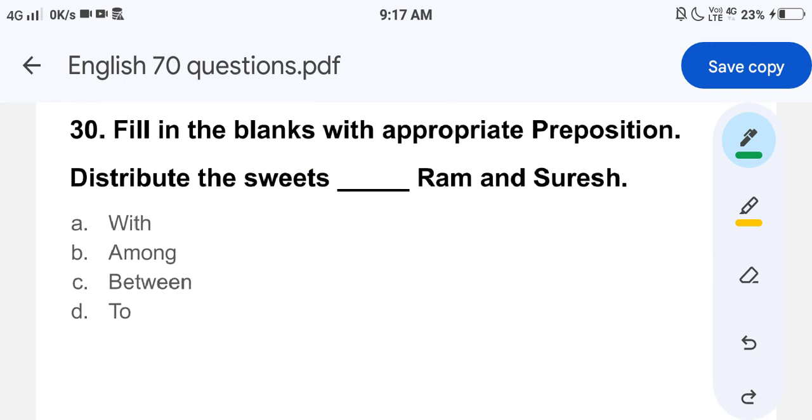Now let's come to the last question. Fill in the blanks with the appropriate preposition: Distribute the sweets ___ Ram and Suresh. Options are with, among, between, to. Let's look at their uses. First, with - it has multiple uses. It indicates association, it expresses method used, it shows possession, it describes possession or ownership. Now let's look at the uses of among. This preposition is used to indicate being part of a group or category. Also, it is used to indicate that something is being divided or shared among two or more people.